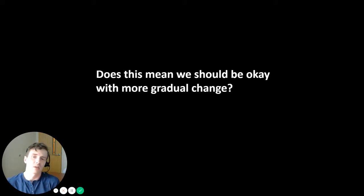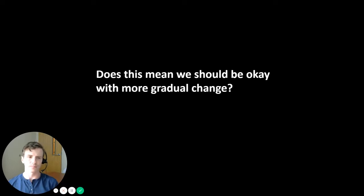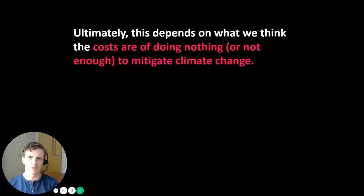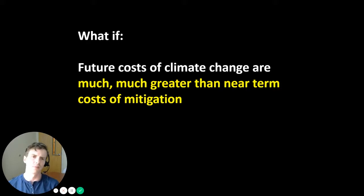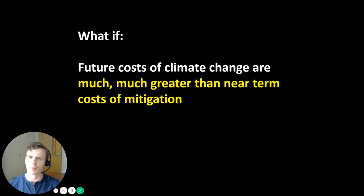The question we have to ask ourselves is: Does this mean we should be okay with more gradual change? Does this recommend taking our foot off the gas pedal in terms of reducing CO2 emissions, and doing that in a more prolonged way as opposed to making it an overnight change? Ultimately, this depends on what we think the costs are of doing nothing or not enough to mitigate climate change. Let's assume — and most people agree — that the future costs of climate change, especially if we do nothing, are much, much greater than the near-term costs of mitigation. Even though it's costly to act quickly, the cost we would pay to mitigate risks associated with future climate change is far less than the actual cost of going through catastrophic climate change, for example, in the year 2100.